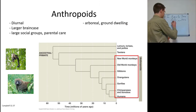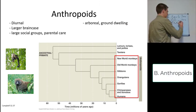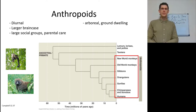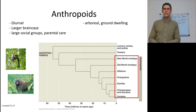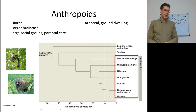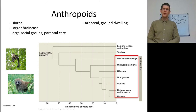The next group would be the anthropoids. Anthropoids are related because they are all diurnal — out during the day, unlike tarsiers which are nocturnal. They have larger brain cases relative to their body sizes. They also tend to form large social groups with extended parental care. Some are arboreal, some are ground dwelling, but we're all active during the daytime.